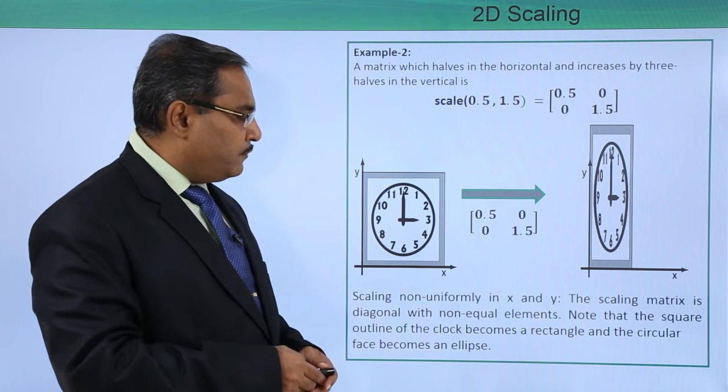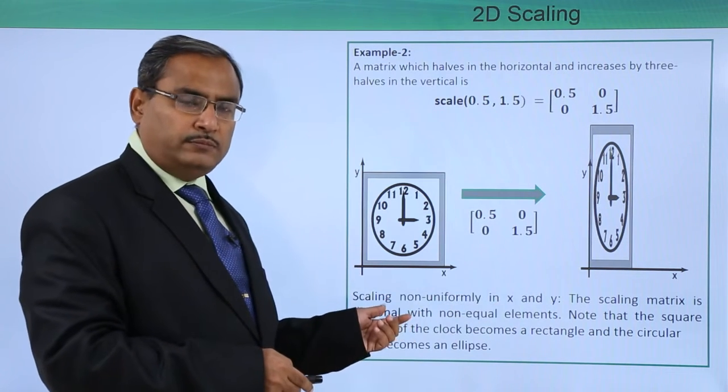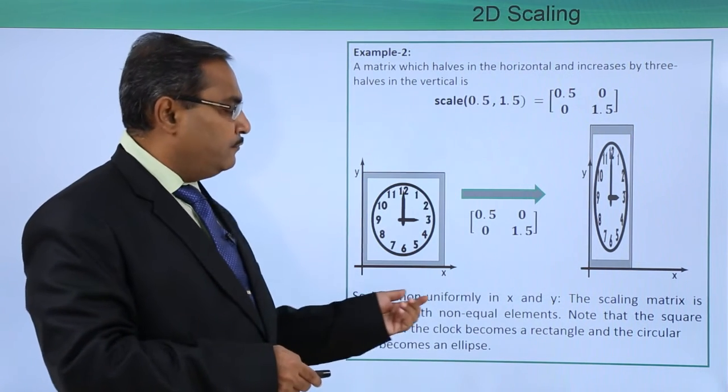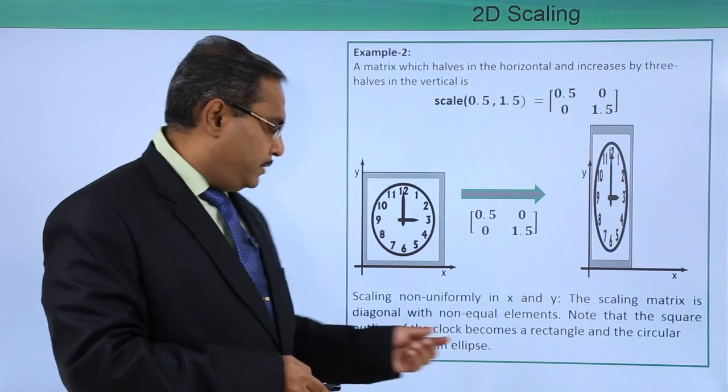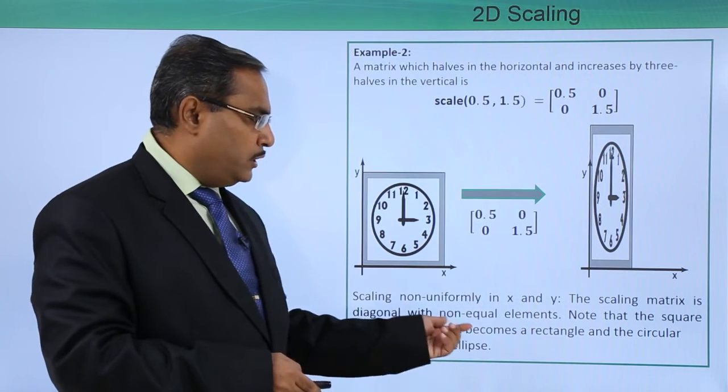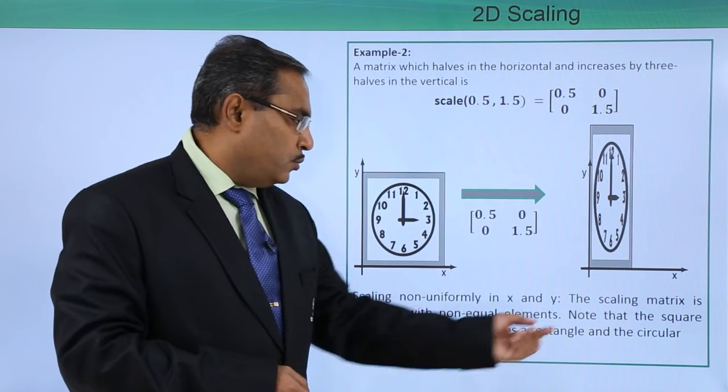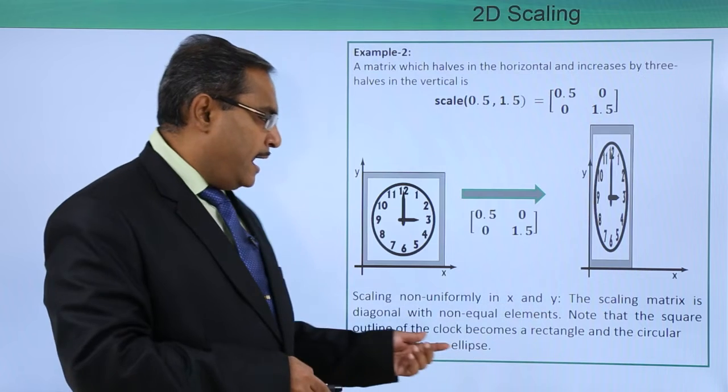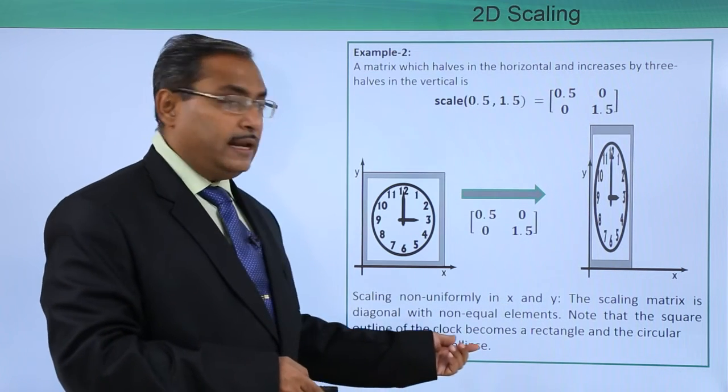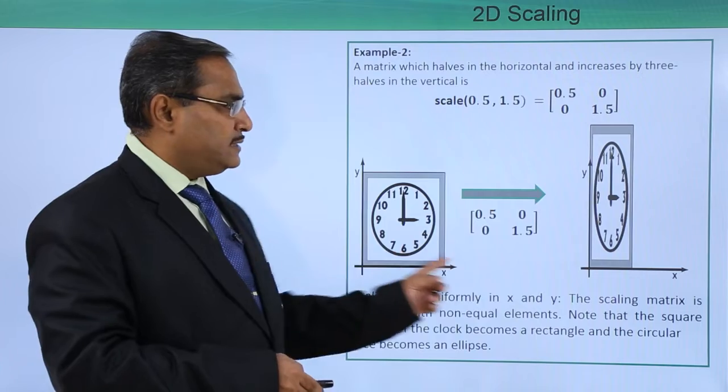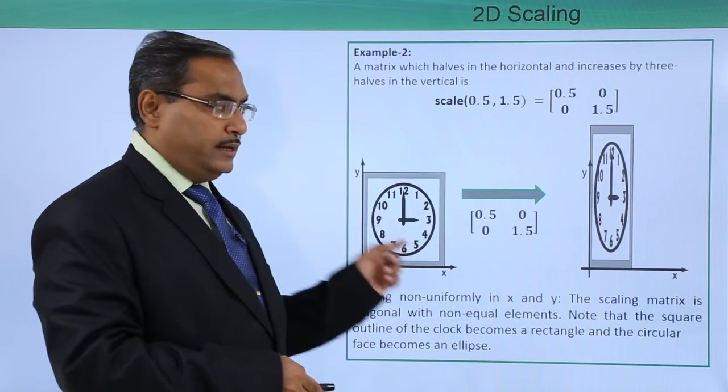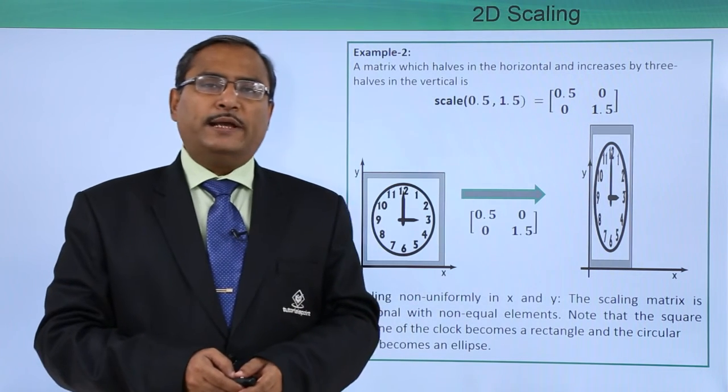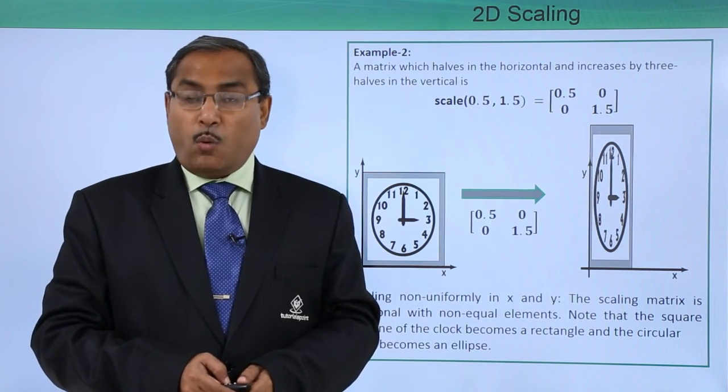Scaling non-uniformly in x and y. Here we are not changing the scaling uniformly; the factor is non-uniform. The scaling matrix is diagonal with non-equal elements, and note that the square outline of the clock becomes a rectangle and the circular face becomes an ellipse. Obviously, this circular face has become ellipse and from the square it has been converted to the rectangle. In this way, in this particular video with proper examples we have discussed what is 2D scaling.